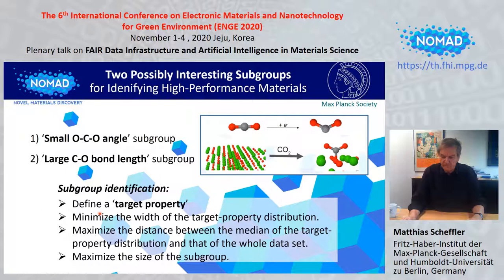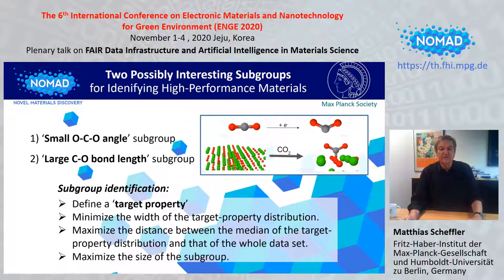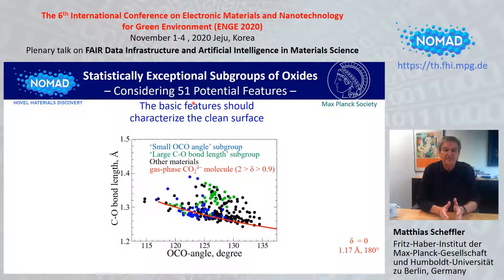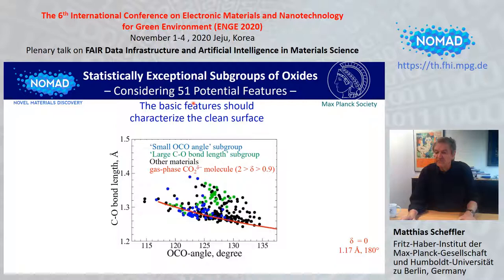We look for two different subgroups: subgroup one is defined by a small OCO angle, and subgroup two by a large CO bond length. We minimize the width of the target property distribution, maximize the distance between the median of the target property distribution and that of the whole data set, and maximize the size of the subgroup. We looked at 51 potential features. The features should characterize the clean surface — they should have no information about the CO2 but should identify the surface, since we ask which surface is a good catalyst.